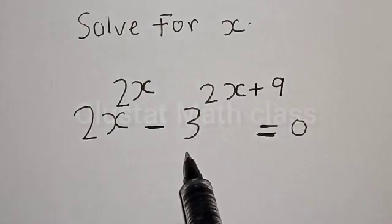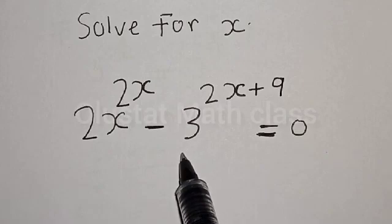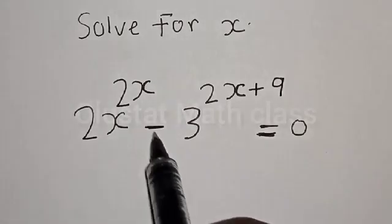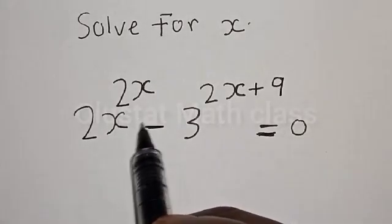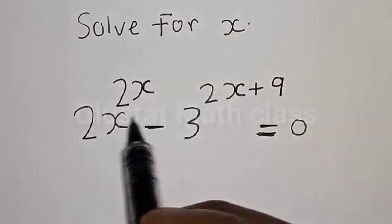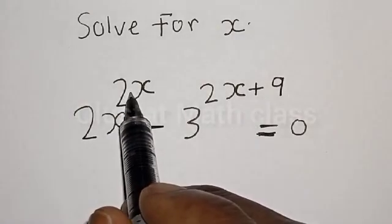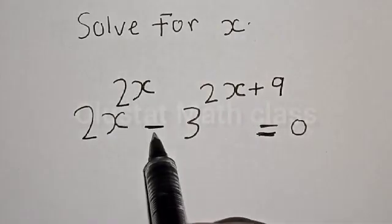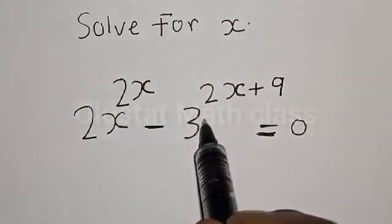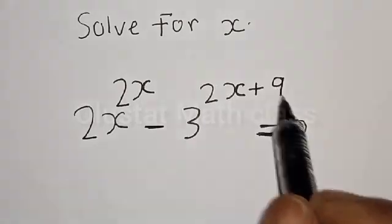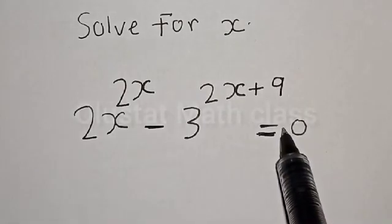Hi everyone, welcome to my class. In this class, we will quickly find the value of s from the given exponential equation: 2s raised to power 2s minus 3 raised to power 2s plus 9 is equal to 0.